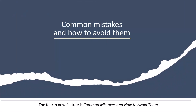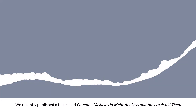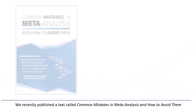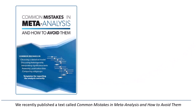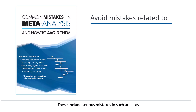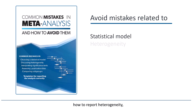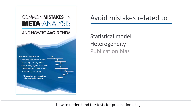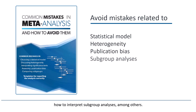The fourth new feature is Common Mistakes and How to Avoid Them. We recently published a text called Common Mistakes in Meta-Analysis and How to Avoid Them. These include serious mistakes in such areas as how to choose a statistical model, how to report heterogeneity, how to understand the tests for publication bias, how to interpret subgroup analyses, among others.